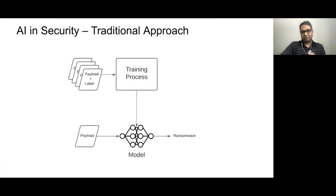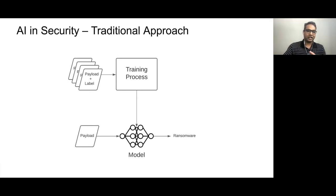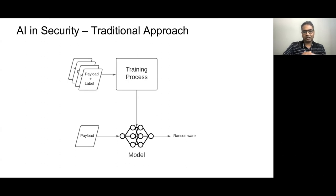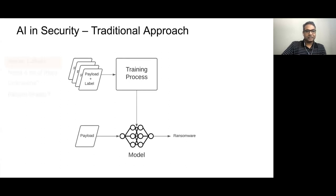A lot of people will recognize the standard way to detect threats. The ML approach is: you have a lot of payloads with labels — the payload could be some files and the label says this is malware, this is ransomware. You take them through the training process, get a model, and when you see a new payload you don't know the label for, the model predicts it. This works pretty well. So what are the challenges?